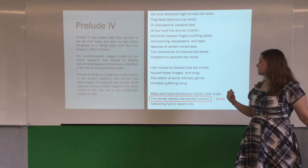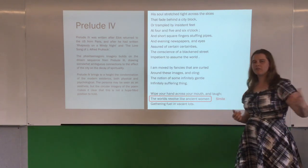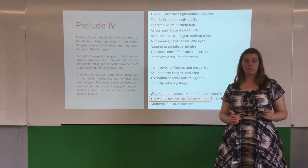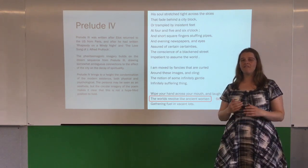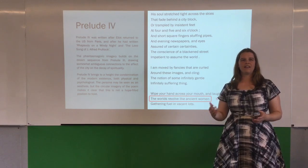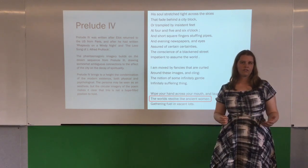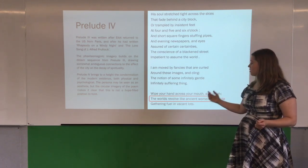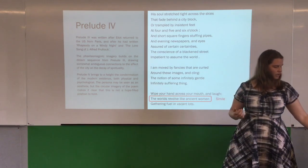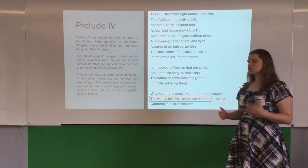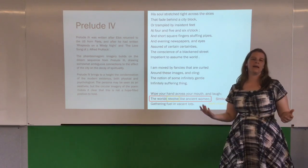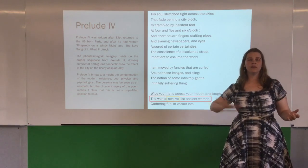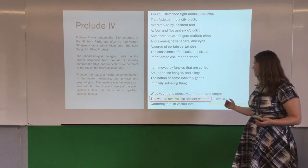And we finish with this simile: 'The worlds revolve like ancient women gathering fuel in vacant lots.' Please keep in mind this is the only simile pointed out in this poem — it is very important that it's a different technique, and the fact that it's only been used once makes it more significant. This continuation of circular imagery in 'revolve' shows that the prelude is not going to end; we are not coming up to a more meaningful life. It's continuing to circle with these ancient women.